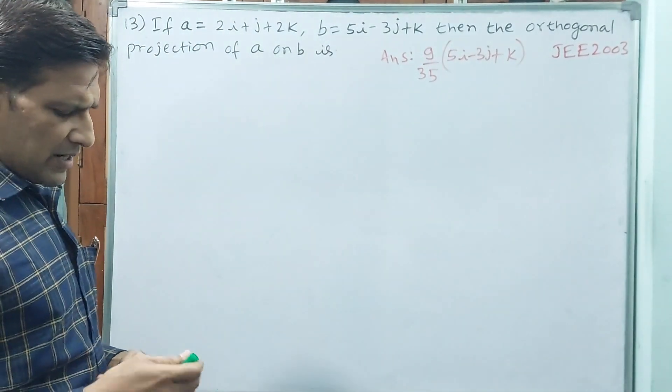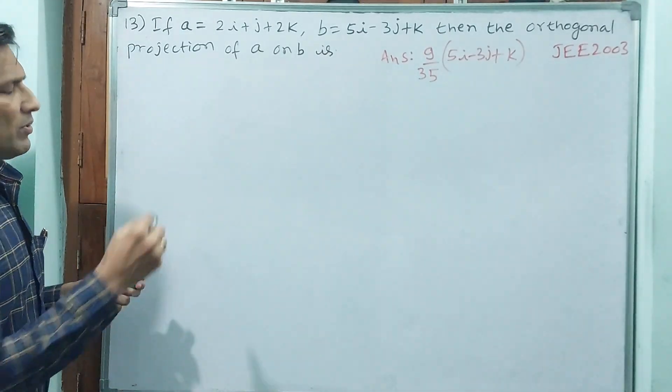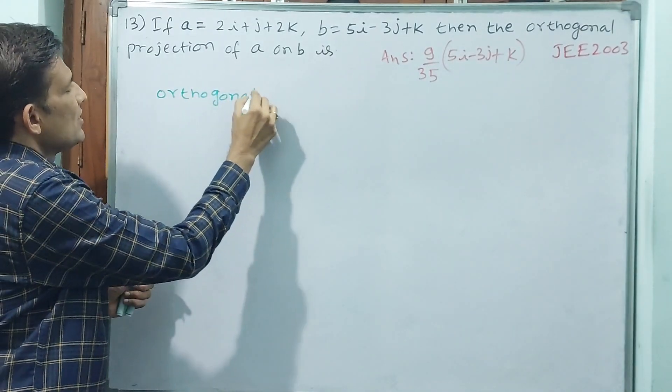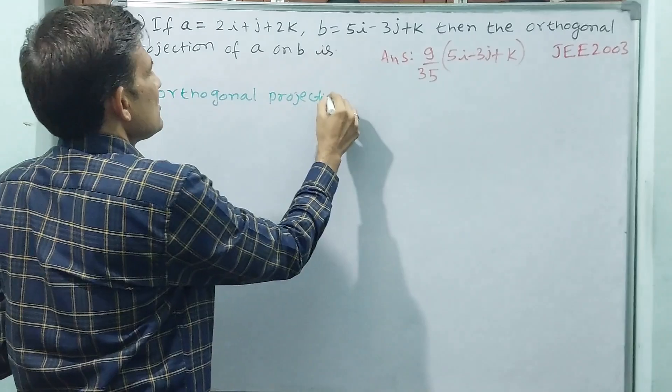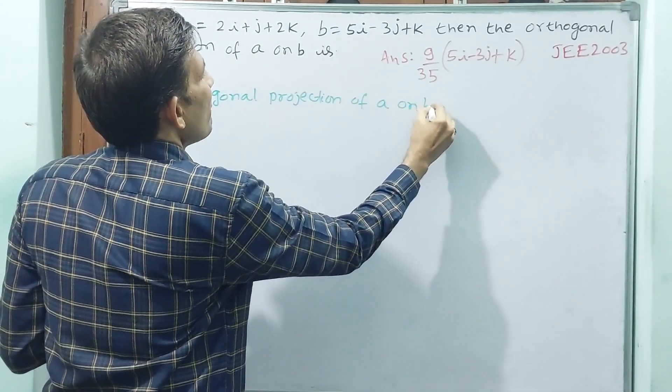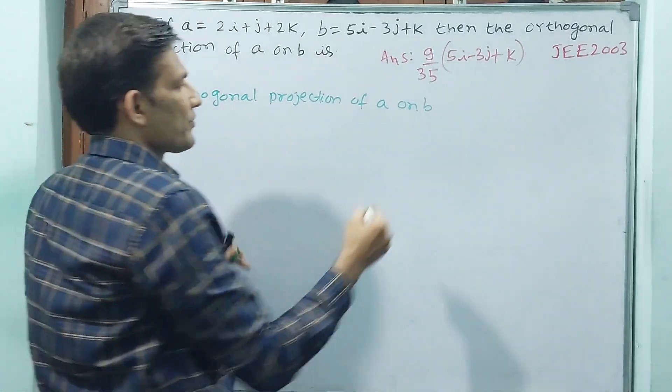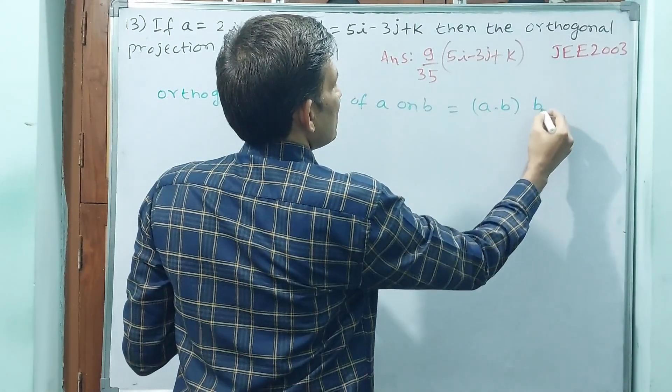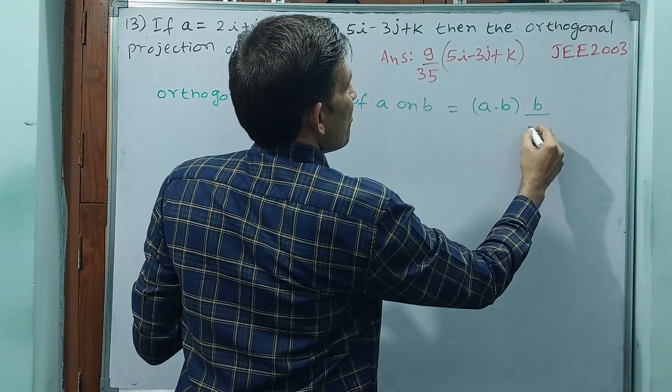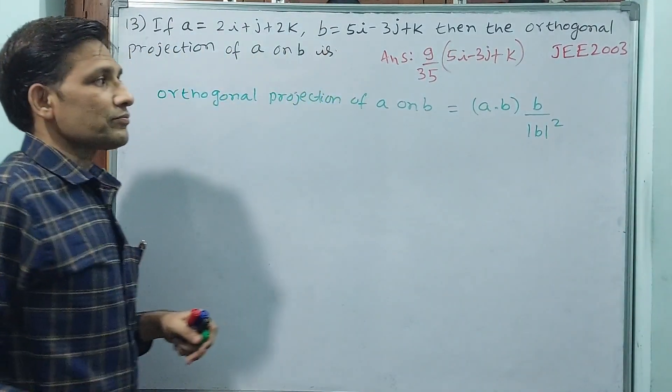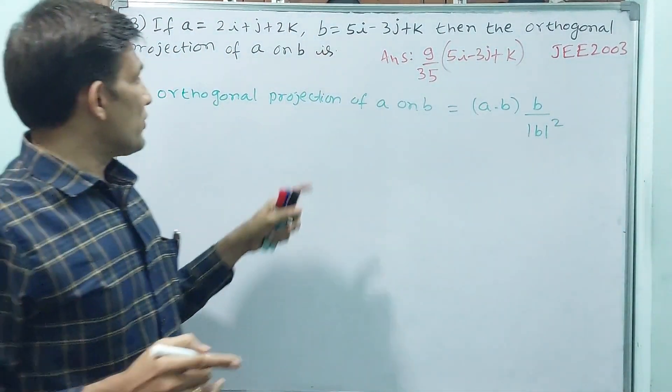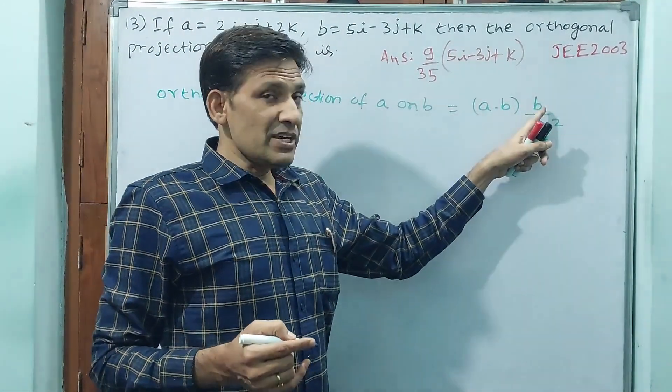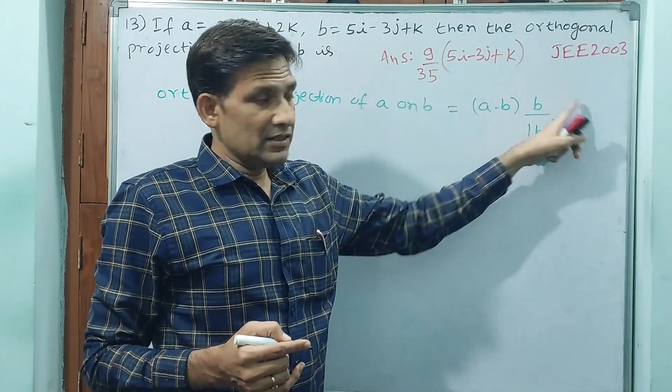See here, two types of projections are there. I am writing the formula. Orthogonal projection of A on B, this is very important, A on B is equal to A dot B into B by modulus of B square. See here, what you are going to understand? A dot B is a scalar, modulus B is a scalar squared. But B is vector. That means the final result is vector with constant.